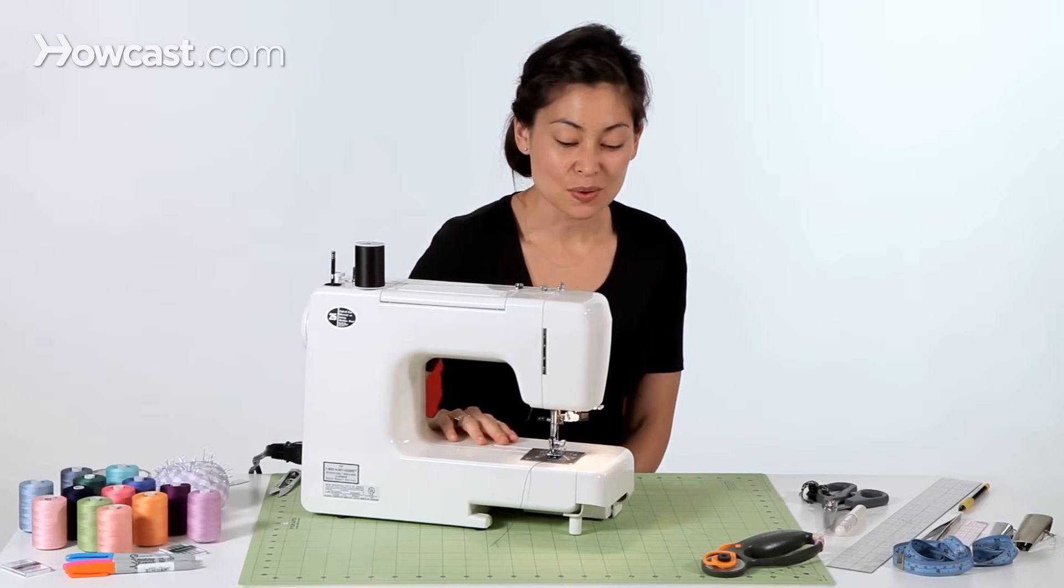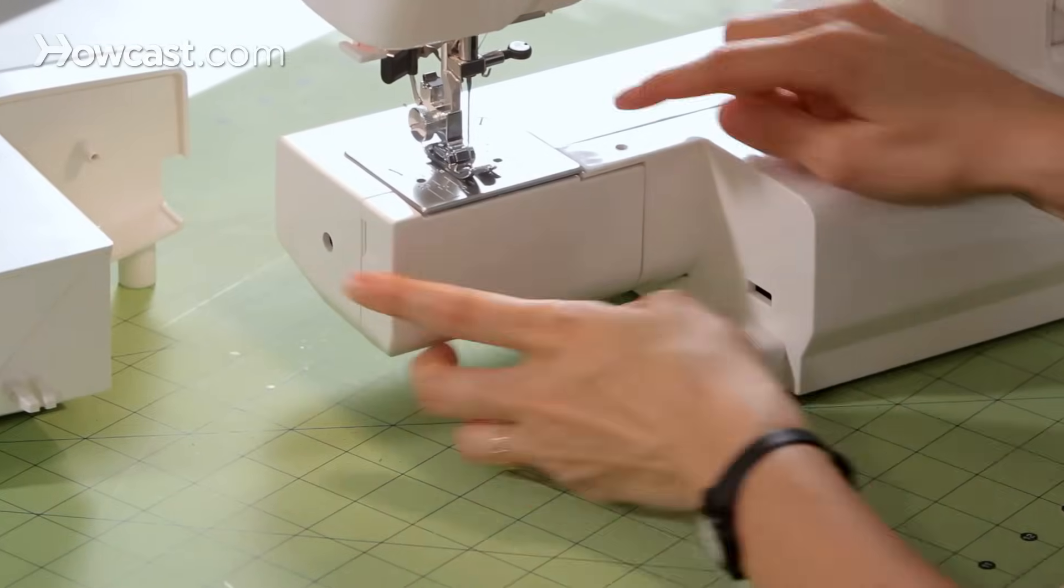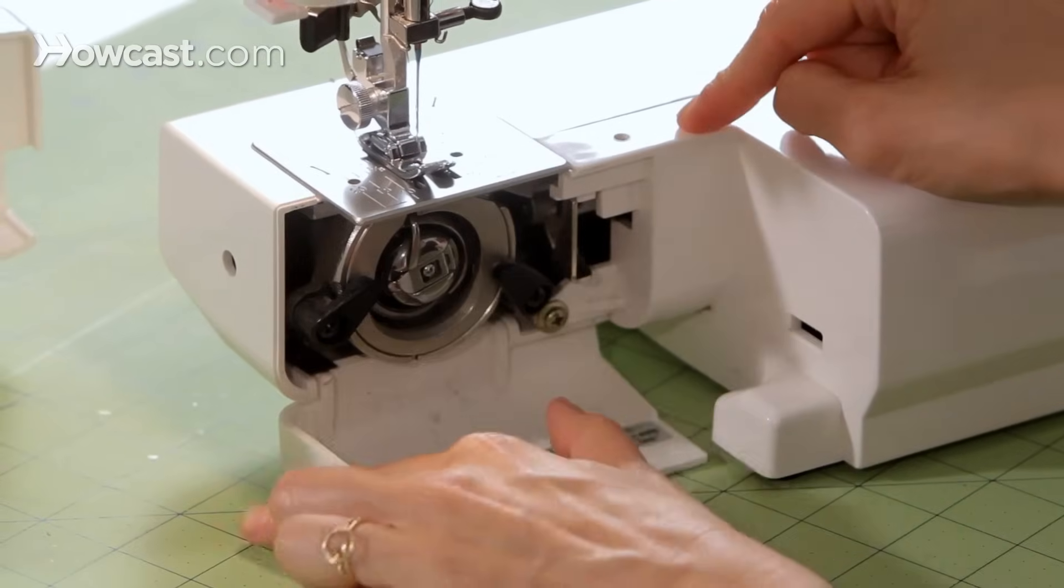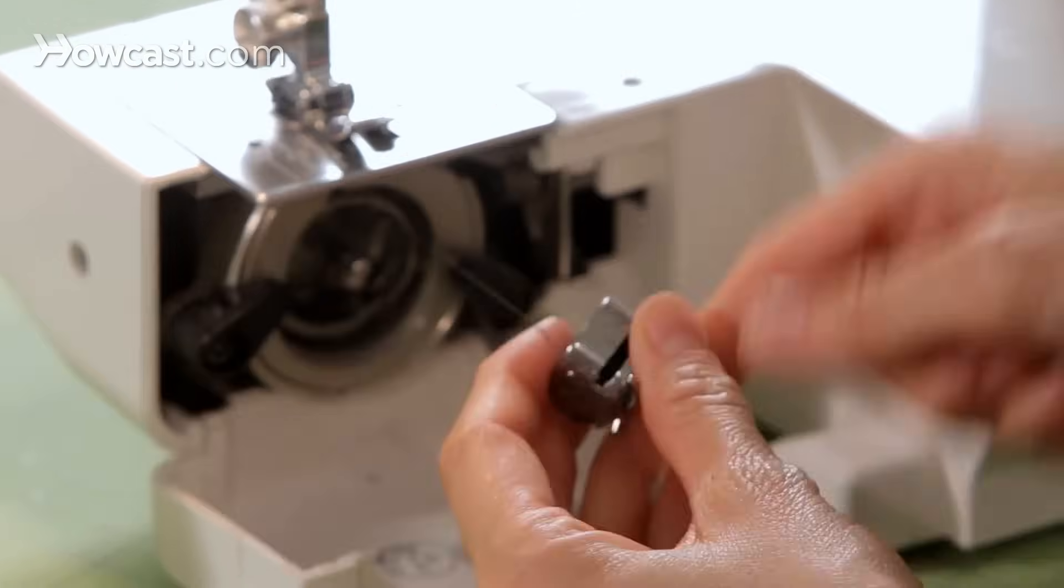Let's go ahead and look at our bobbin area. I'm just going to remove this case and get into our bobbin area. I open this up, and I see here is my bobbin casing.